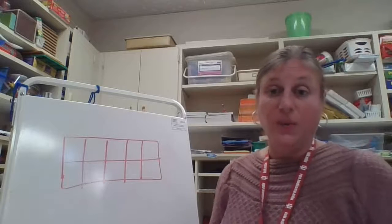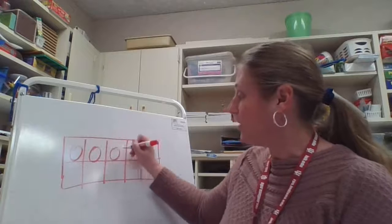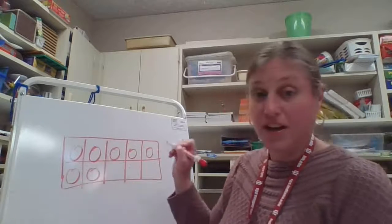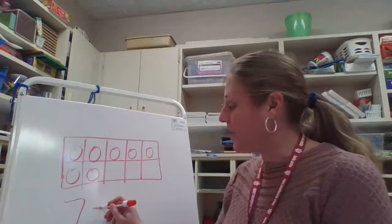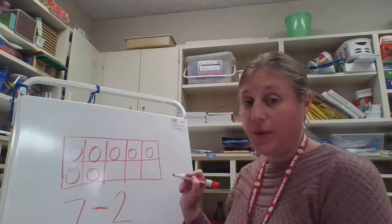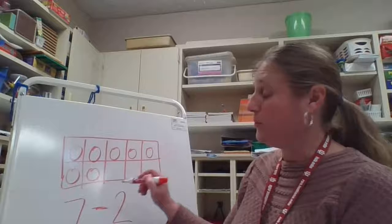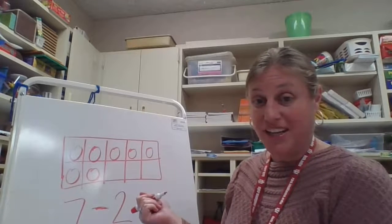So on our first GoMath page, we have seven counters. I know you probably do not have counters at home, that's okay. We can always draw circles. So we have seven and it says to take away, there's that minus sign, take away two. So when I'm using a 10 frame, I will cross off how many I'm taking away.